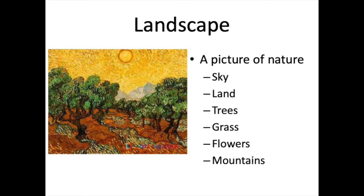So what is a landscape? A landscape is a picture of nature. Any kind of artwork of outside — sky, land, trees, grass, flowers, mountains, maybe a little river. A landscape is a picture of nature.